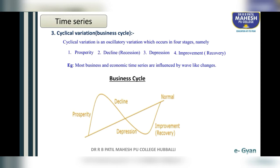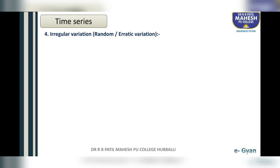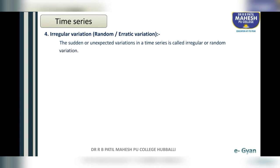The study of cyclical variation is helpful to businessmen and economists for framing suitable policies and stabilizing the level of business statistics. Now let us see the fourth component, that is irregular variation, also called random or erratic variation. The sudden or unexpected variations in a time series are called irregular or random variation.